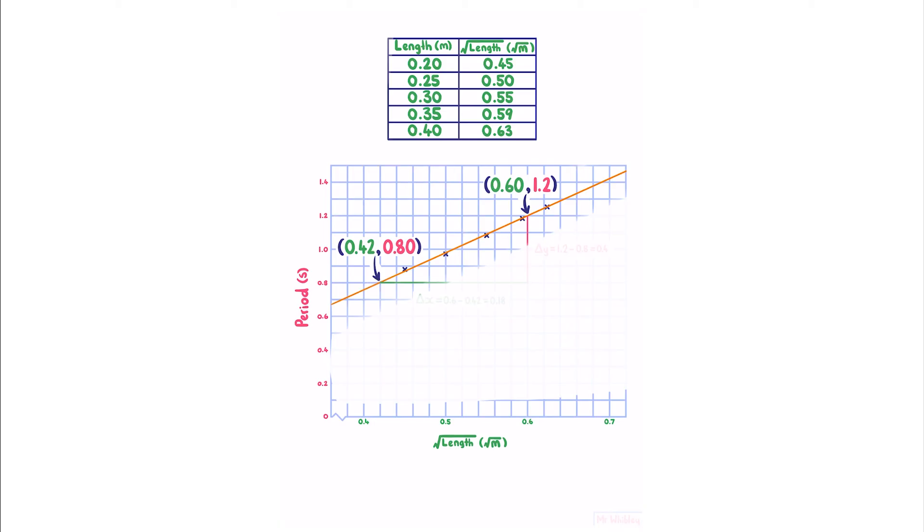Note that these are not the original points that I plotted, these are points that I've arbitrarily chosen, mostly to make the mathematics easier. My change in y is the difference between 1.2 and 0.8, which is 0.4, and my change in x is the difference between 0.6 and 0.42, which is 0.18. To calculate my gradient, that is just our change in y divided by change in x, which is 0.4 over 0.18, which is 2.2.